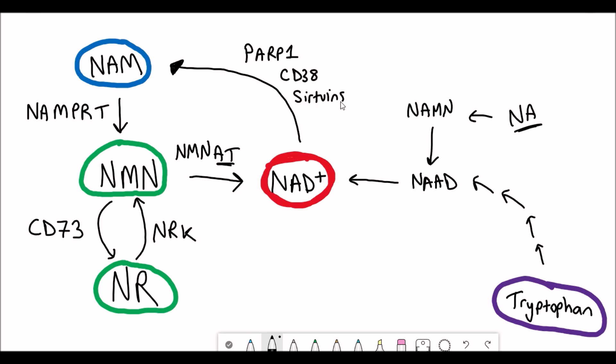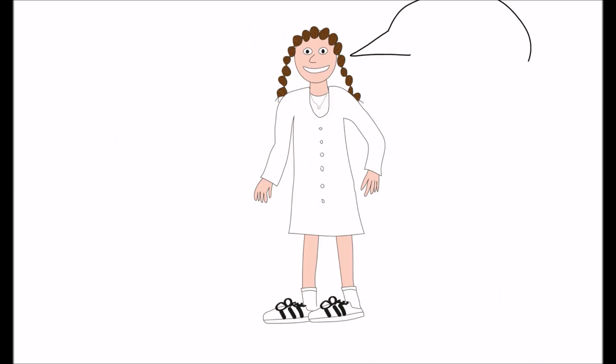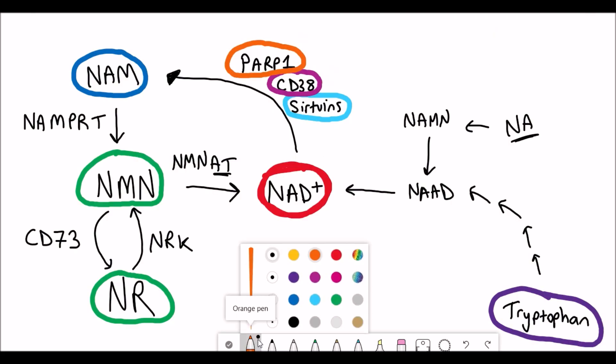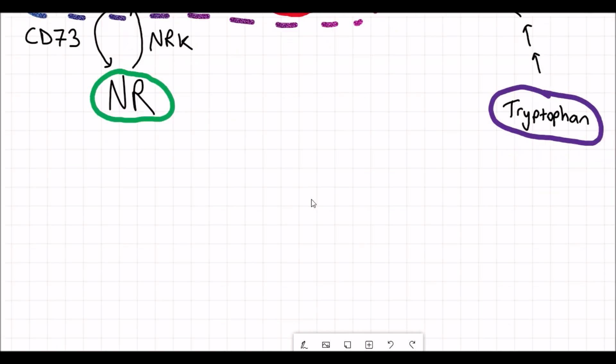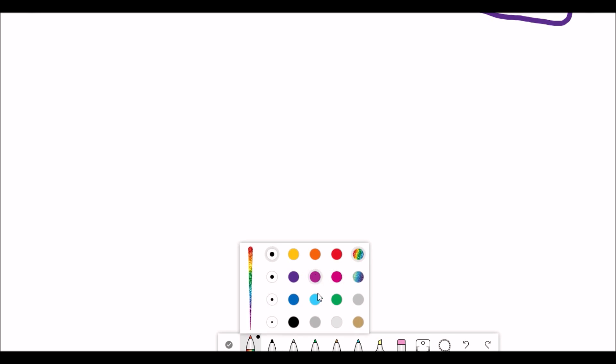And another molecule you might have heard about is NAM, which is nicotinamide. NAM is generated as a product by these NAD plus consuming enzymes. So this includes SIRTUINs, CD38 and PARP1. I'm pretty sure I probably confused you by this point. So I'm going to simplify it a bit further and just focus on the generation of NAM from the use of SIRTUIN activity, because that is the most interesting in terms of understanding the link between NAD plus and aging.